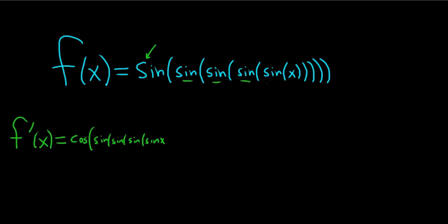So you have 1, 2, 3, 4 sines — we have 1, 2, 3, 4 parentheses, so we need 1, 2, 3, 4 parentheses. If you count parentheses, it always works. Super cool. Times the derivative of the inside piece here.